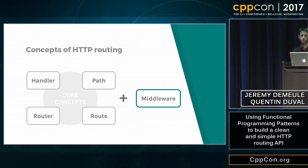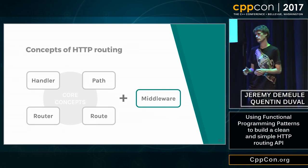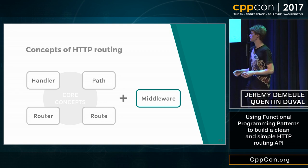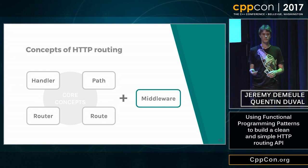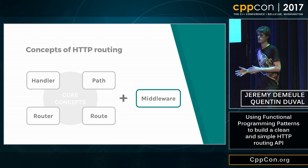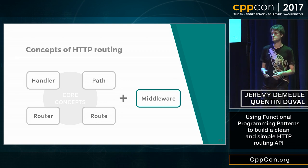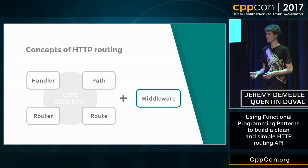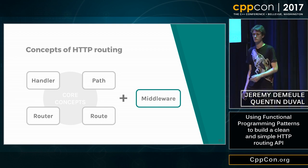This is very concise. With these eight lines, we describe all the previous manual attempts we saw just before. So, we are done with the core concepts of the API: we've got the handler, the path, the router, and the route. Now we will describe the last concept, which is not strictly needed but which is really useful: the concept of a middleware.